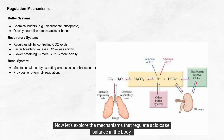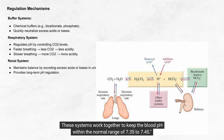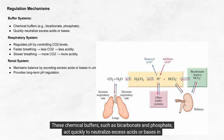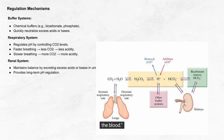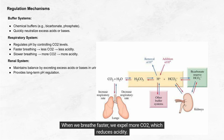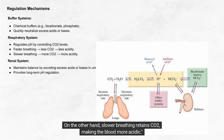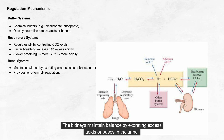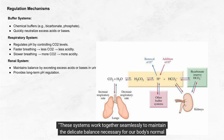Let's explore the mechanisms that regulate acid-base balance. These systems work together to keep blood pH within the normal range of 7.35 to 7.45. Buffer systems are the body's first line of defense — chemical buffers such as bicarbonate and phosphate act quickly to neutralize excess acids or bases in the blood. The respiratory system regulates levels of carbon dioxide (CO2) in the blood: breathing faster expels more CO2, reducing acidity, while slower breathing retains CO2, making the blood more acidic. The renal system, or kidneys, offers a longer-term solution by excreting excess acids or bases in the urine. These systems work together seamlessly to maintain the delicate balance necessary for normal functioning.